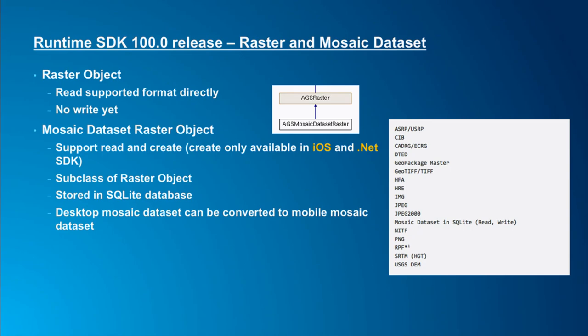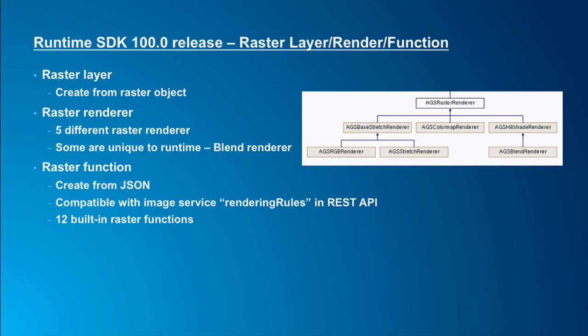Beyond that, we also have a set of new objects for displaying raster data. We have a raster layer object that you can create from a raster object and add to the map to render your image. We have five different raster renderer classes you can apply to your raster layer to change the visual effect of your pixels. Some of the renderers are unique to runtime, like the blend renderer, which meshes a DEM hillshade surface with your colored image to give a terrain effect in your base map — a function developed only for runtime, not even available in desktop or Pro.